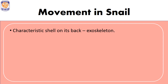A snail carries a hard shell on its back, which is its exoskeleton. An exoskeleton is the type of skeleton present outside the body. Remember, the snail does not have a backbone — it does not have any bone inside its body — but it has an exoskeleton in the form of a hard shell on its back.